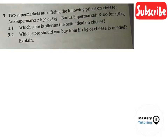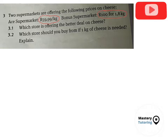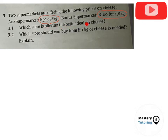Welcome to another special video. Here's a question: two supermarkets are offering the following prices on cheese. Ace supermarket offers cheese at R59.99 per kg, while Bonus supermarket offers 100 rand for 1.8 kg. These are actually rates, and we must take note of that fact. Question 3.1 asks which store is offering the better deal on cheese.